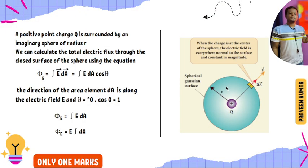A positive charge Q is surrounded by an imaginary sphere of radius r. We can calculate the total electric flux through the closed surface of that sphere.